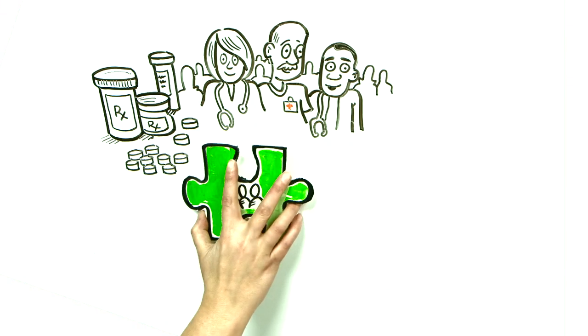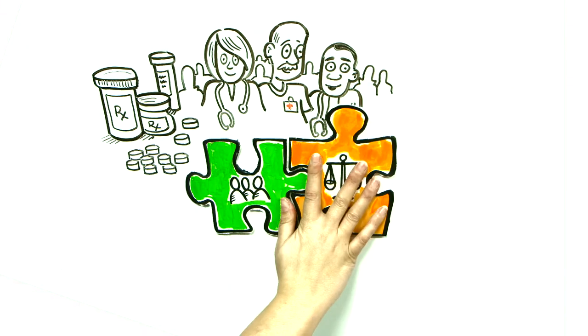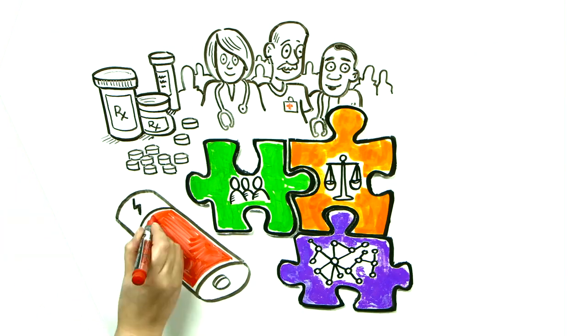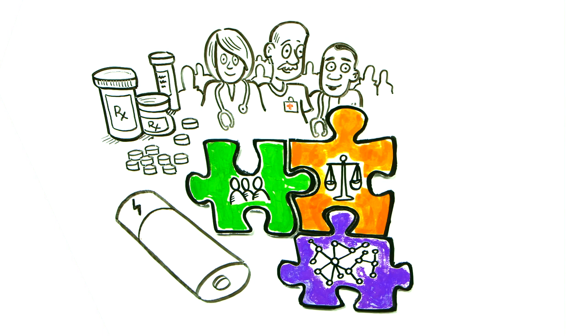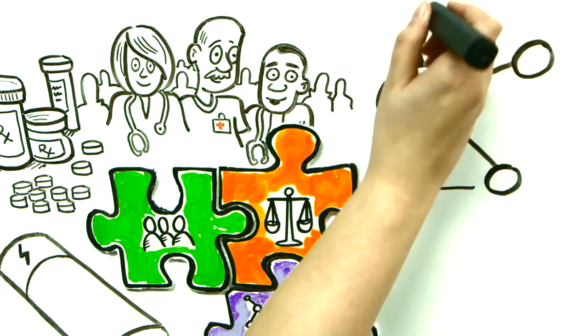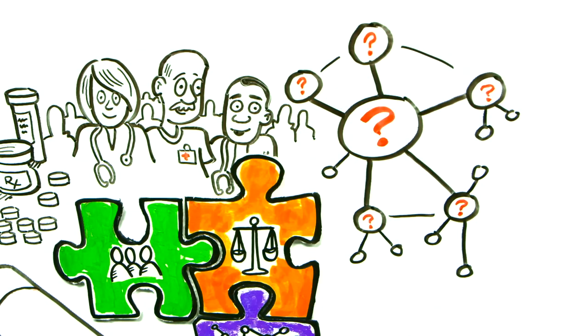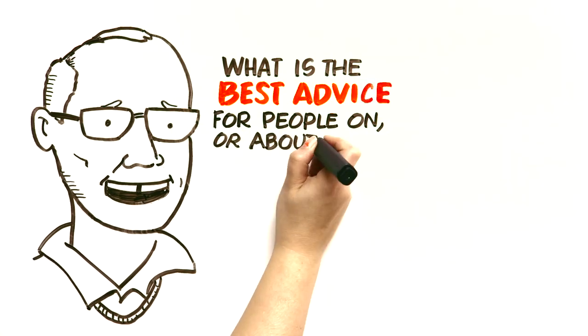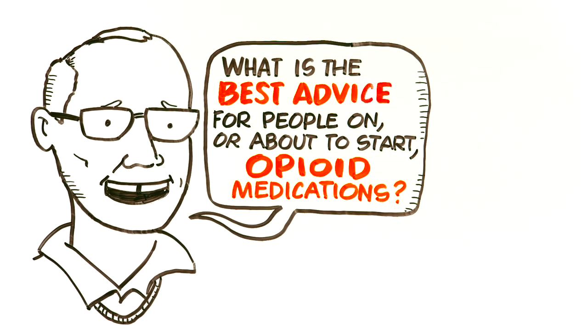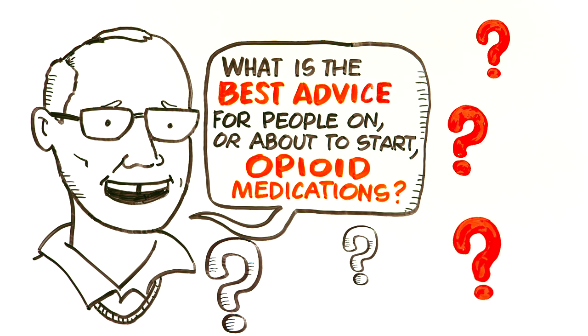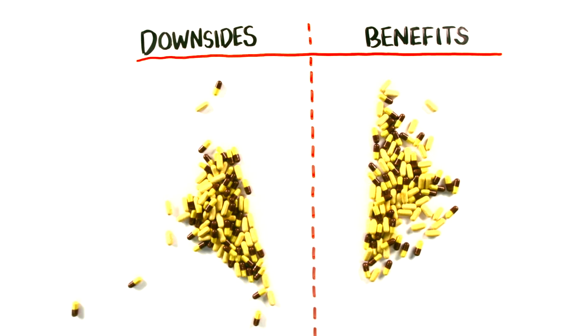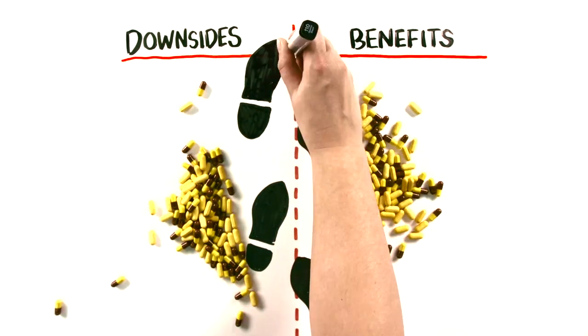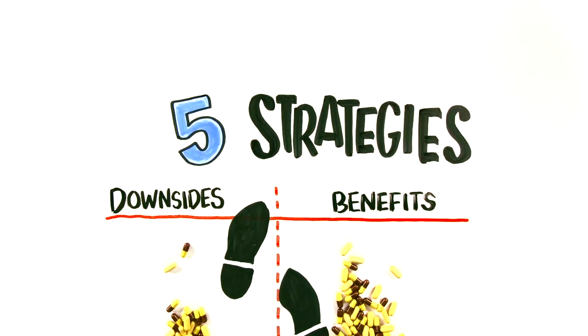So when you combine these complicated social and legal factors with the emerging data on opioids that suggest that, for many, their effectiveness diminishes over time, you can see why prescribing these medications has become so complex, and why the question I posed at the beginning, what is the best advice for people on or about to start opioid medications, is actually not so simple. But now that we've reviewed some of the background information and stepped through the assessment of the downsides and benefits to opioids, I'd like to offer five strategies as a partial answer to that question.